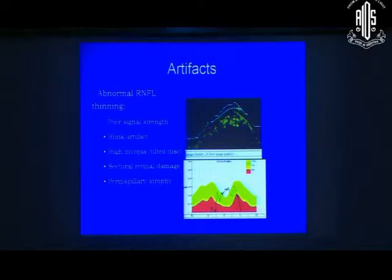You also get artifacts which look like this. And when you look at this map, that looks like a weird black line which is going all over the place. Now this can be because of poor signal strength, it can be because of a blink, it can be because of high myopia or it can be because of sectoral retinal damage like a scar or something of that sort. So if you see that black line hitting 0 anywhere, you need to take a closer look at that scan because the RNFL thickness never drops to 0 because you have supportive tissue.